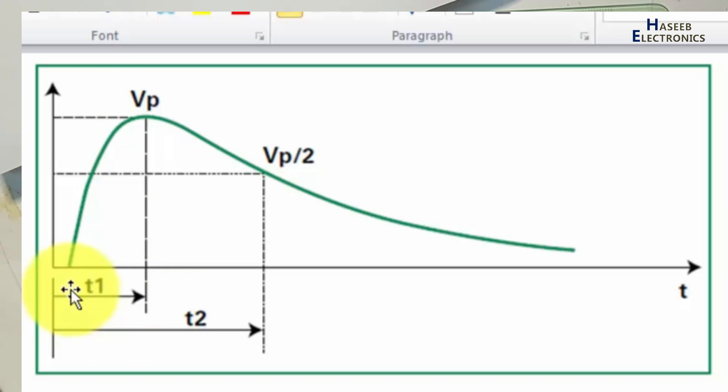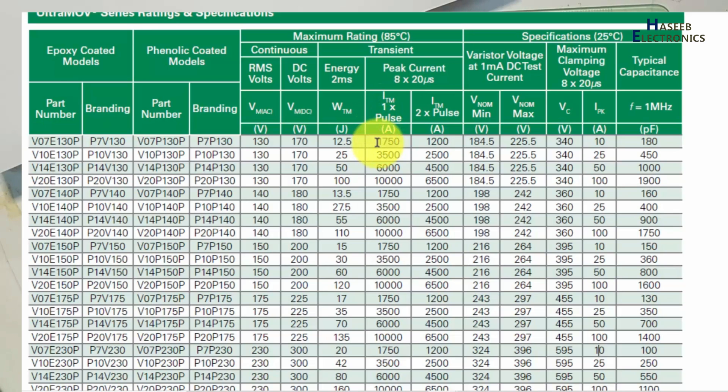After 8 microseconds, if the pulse remains high up to 50 percent of its peak, this time will cover from t0 to 50 percent - that is 20 microseconds. 8 microseconds for rising, 12 microseconds for falling. It is called 8 by 20 or 8 over 20.